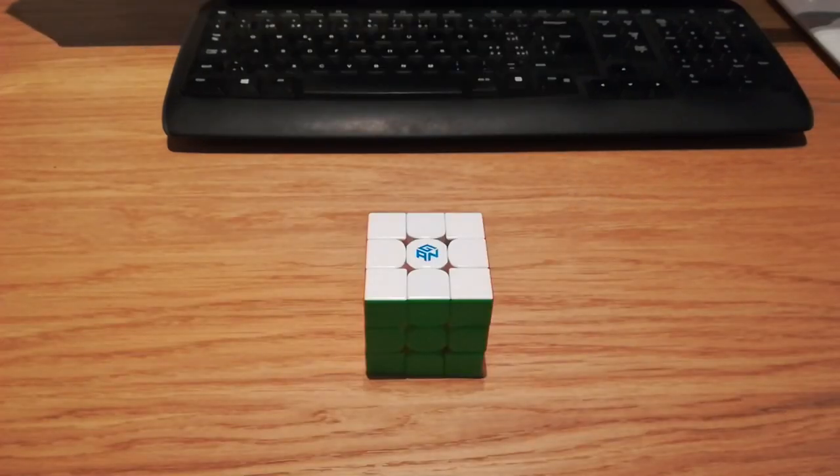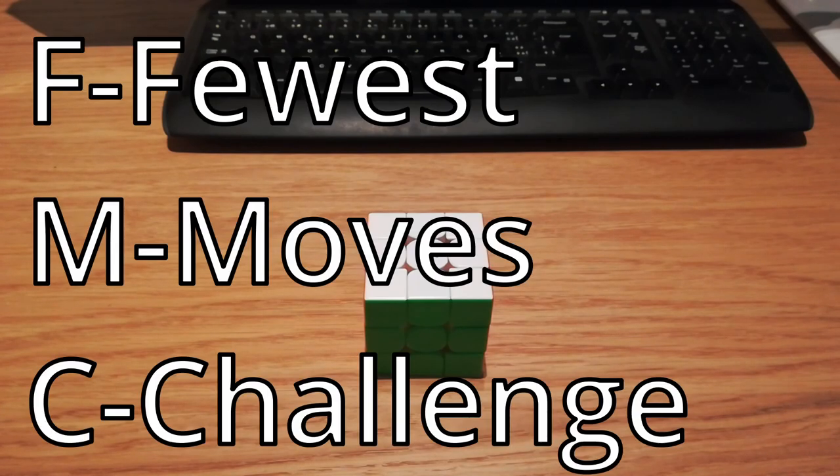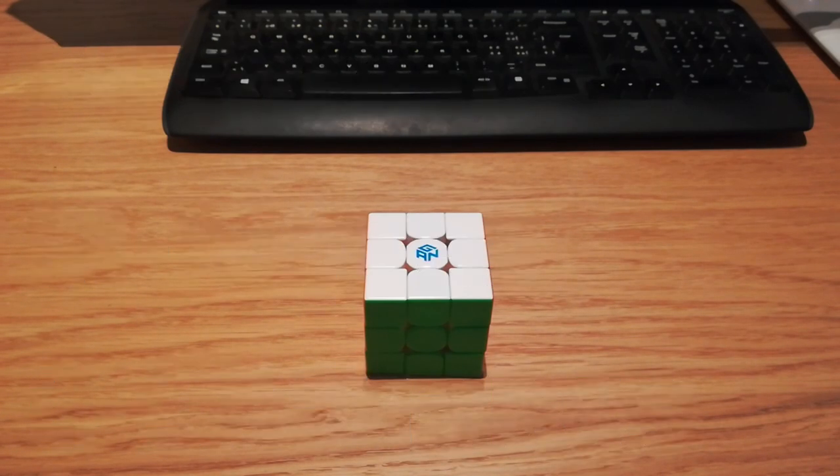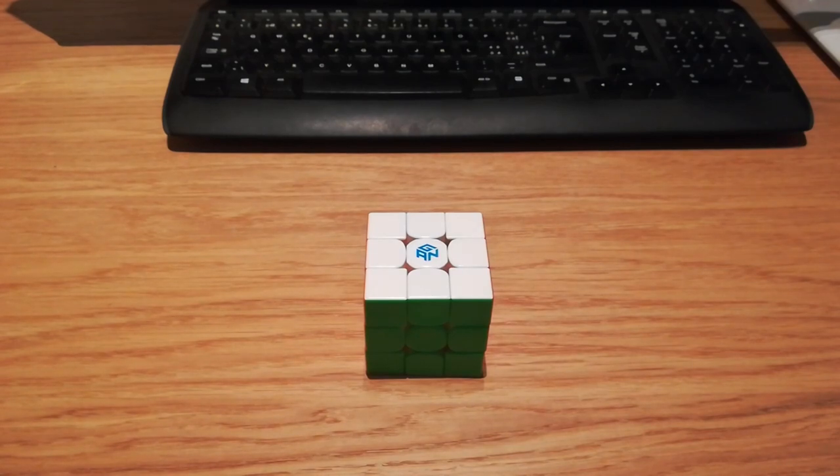So for those of you who don't know, FMC stands for Fewest Moves Challenge and is a speedcubing category in which you have to find and write down a solution with the shortest amount of moves. There are many techniques which are only used for this category, and the funny part is I don't know much about them since this was my first time ever competing in it.